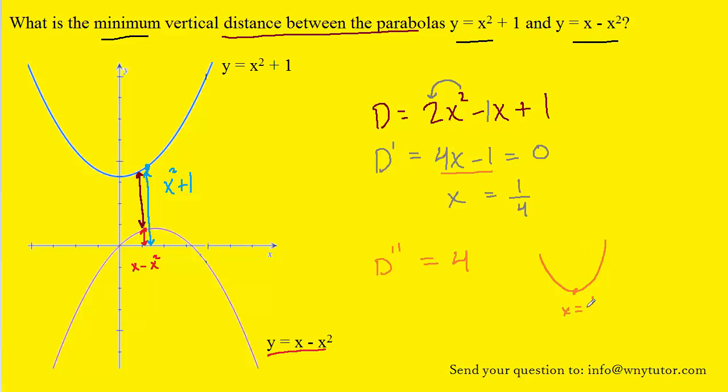So when x equals 1 fourth, we could see that a concave up function would be yielding a minimum at that value of x. So we could say that therefore at x equals 1 fourth, the distance is minimized.